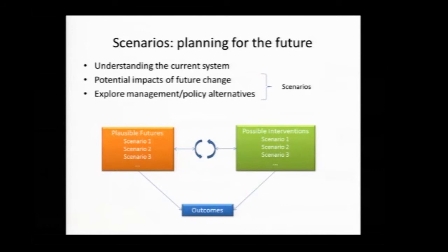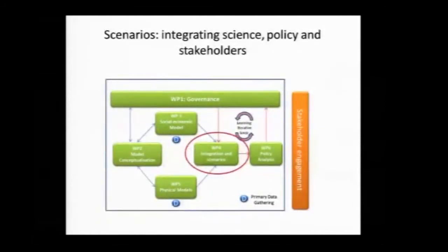This diagram gives an overview of the different components that are part of the ESPA Delta project — the different work packages. A number have already been introduced, but it shows the integration of multiple different components: biophysical models, socio-economic components, and the influence of governance, integrating these together both in terms of modelling and developing different scenarios. These are then used to influence policy as part of an iterative loop engaging with stakeholders throughout all the stages.